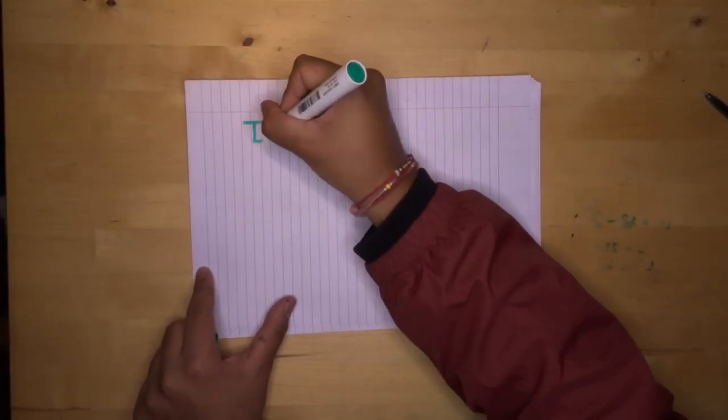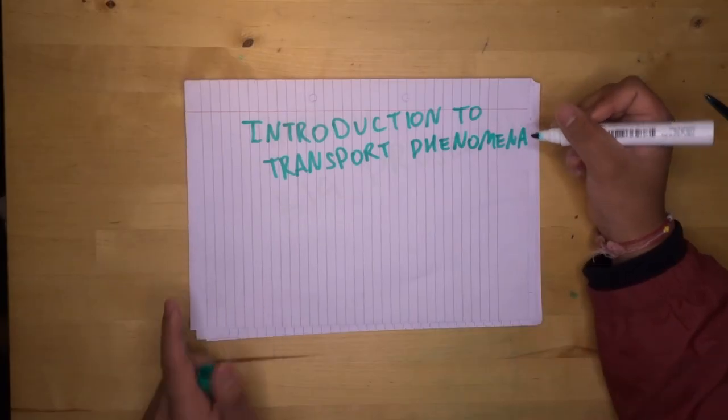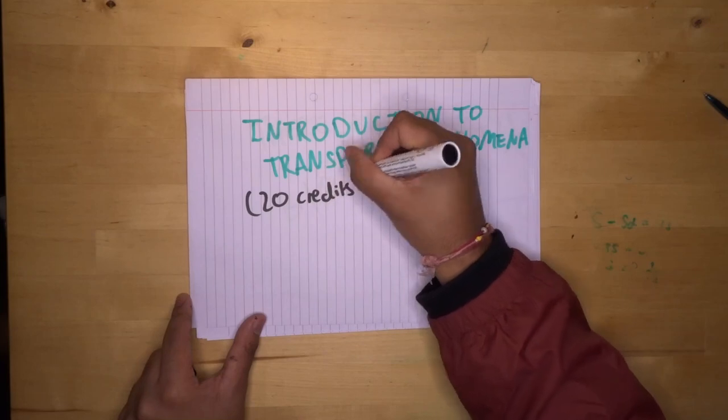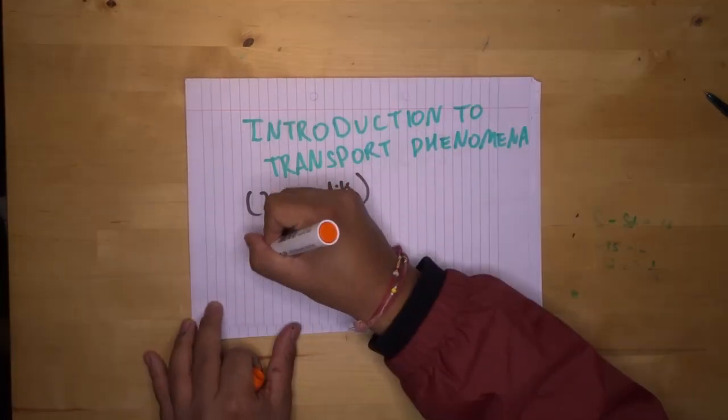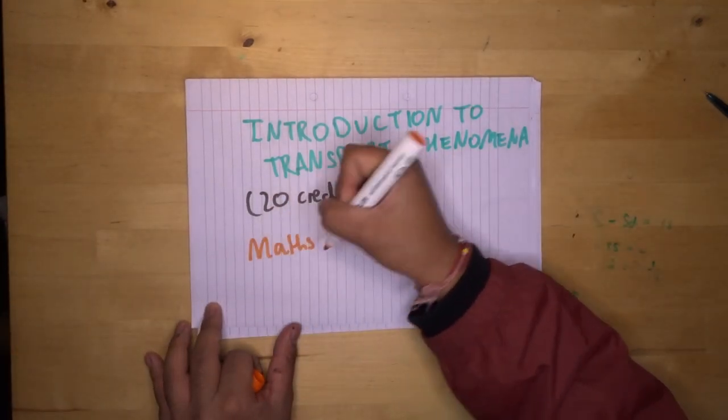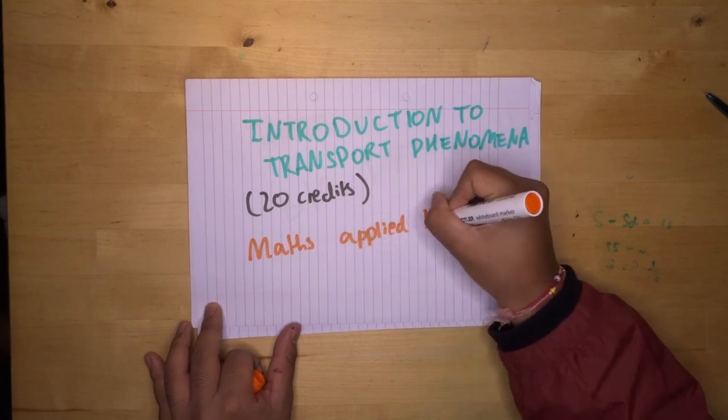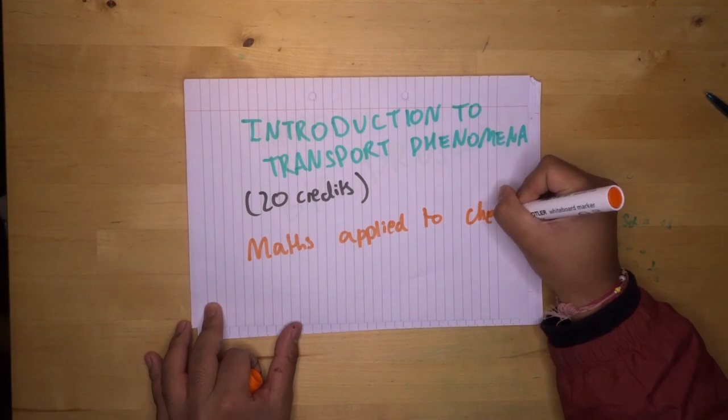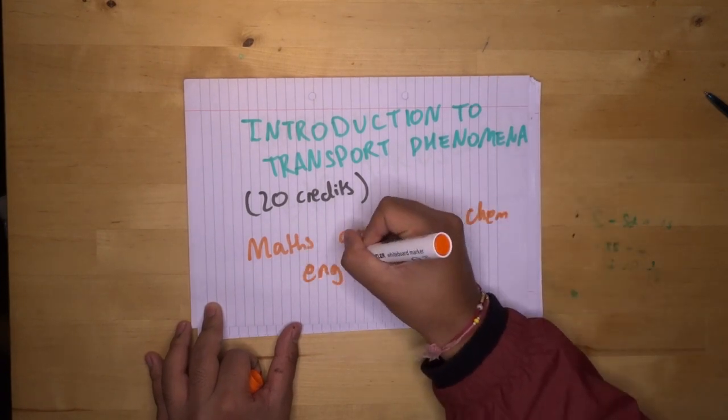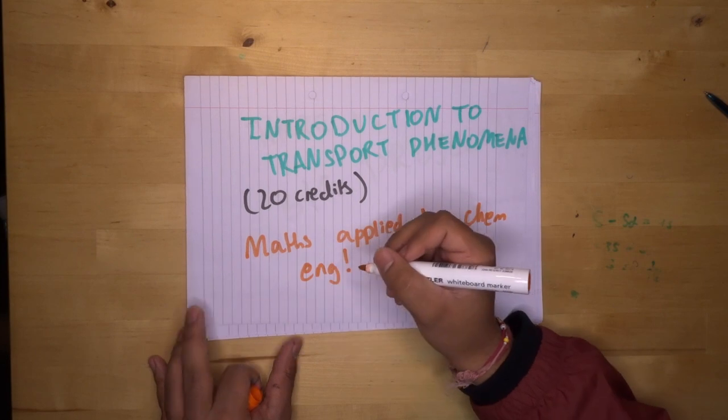The next module we are going to talk about is introduction to transport phenomena. Now, this is a 20 credit module and it revolves around applying the maths that you learn in modelling concepts and tools and applying it to chemical engineering.